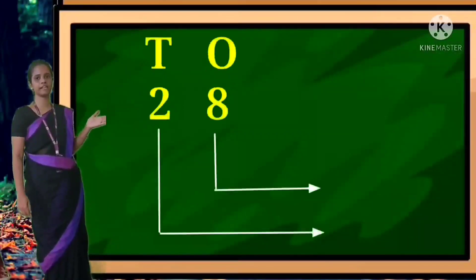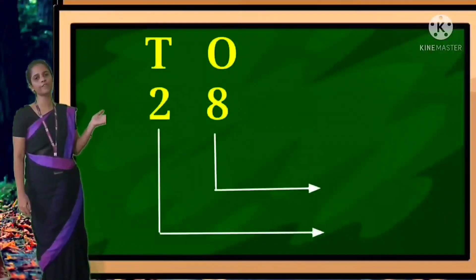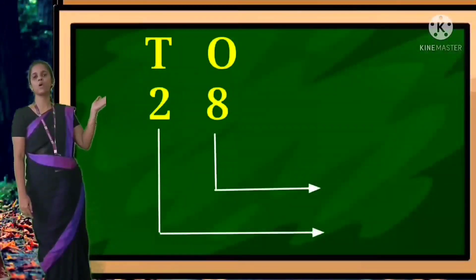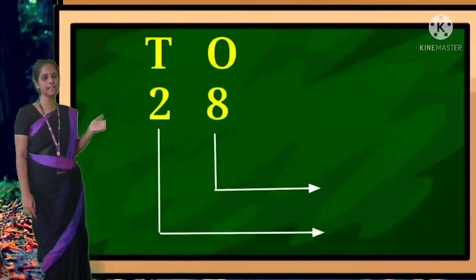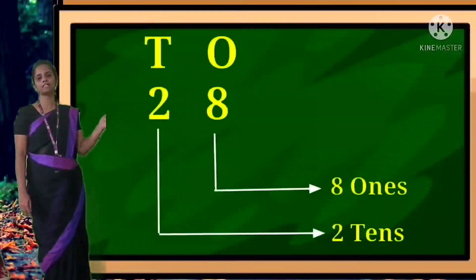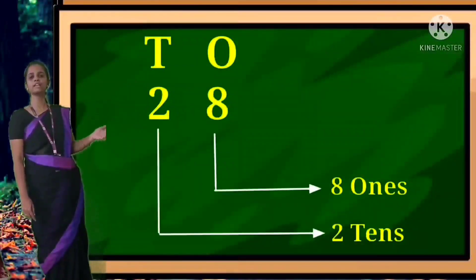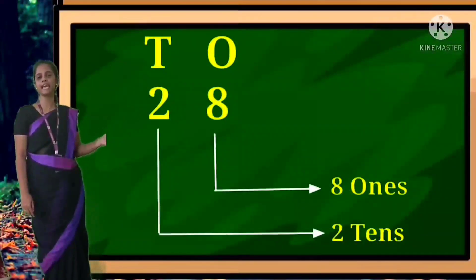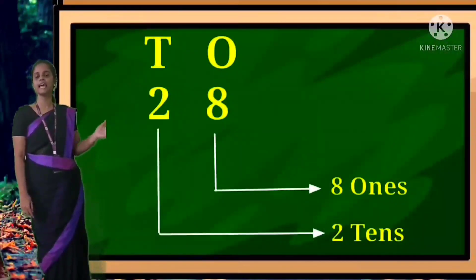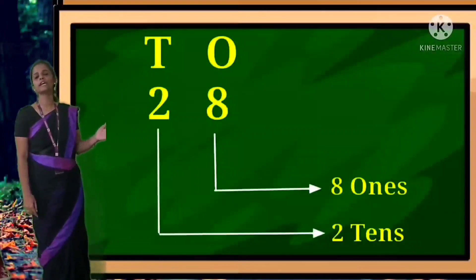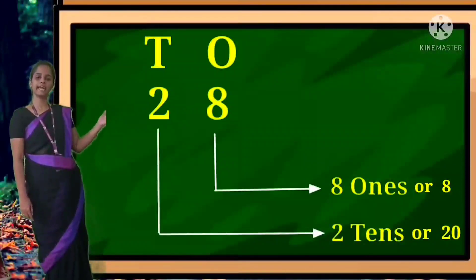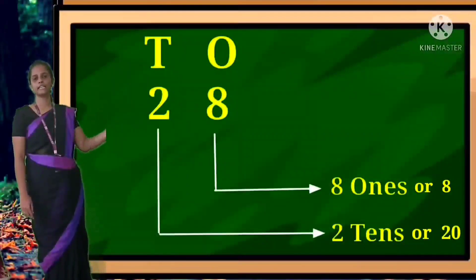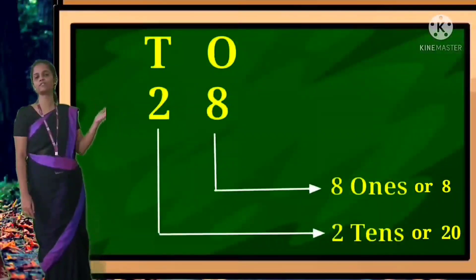See the first sum: 28. I will draw an L-shaped line under 8 and under 2. The place value for 8 is ones, and the place value for 2 is tens. You should write 8 ones (O-N-E-S) and 2 tens (T-E-N-S). Or you can write in numbers: 8 in ones place, 20 in tens place.